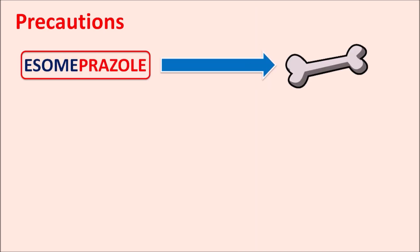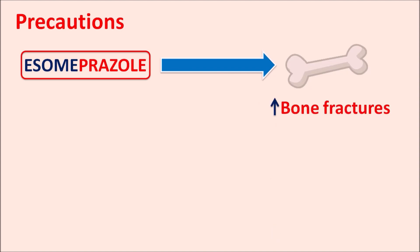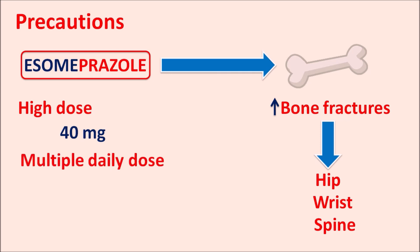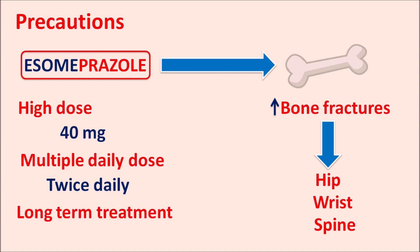Another effect of this drug is on the bones. S-omeprazole can increase the risk of bone fractures, possibly related to decreased calcium levels resulting in demineralization. It can produce fractures of the hip, wrist, and spine. In patients with risk of osteoporosis, this drug should be carefully given, and the risk is higher at high doses (40 mg), with multiple daily doses, or with long-term treatment greater than one year.